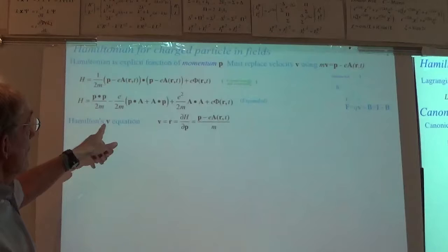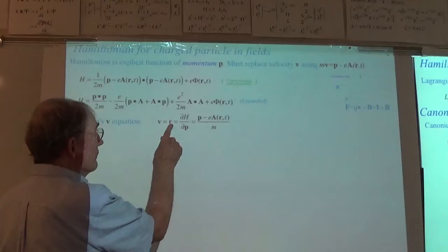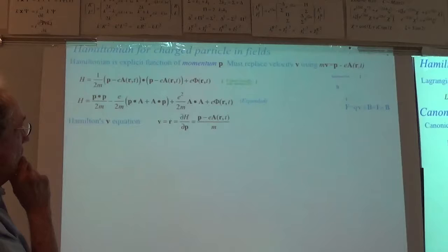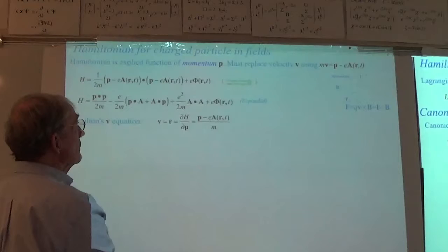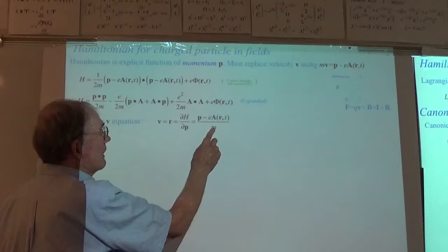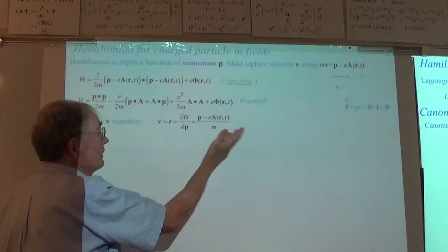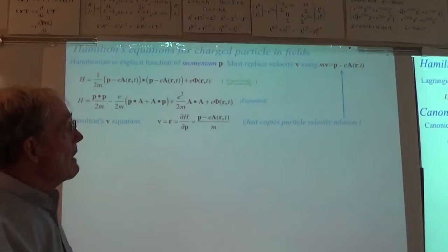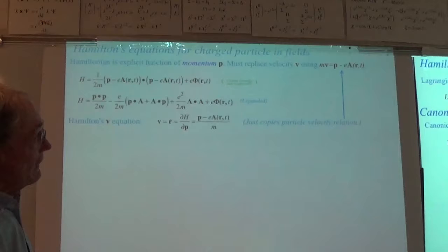Let's take Hamilton's velocity equation. What do we get if we ask for the partial derivative of H with respect to P? You can look at this right here — since this term isn't a function of P — and just write it out. There's the velocity. That's what we said our velocity was: canonical momentum divided by m minus the A term. There's a shift in velocity going on here.